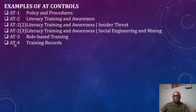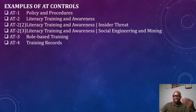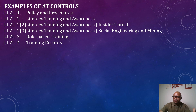AT-4 is training records. Organizations must keep a record of every training provided to employees — who has taken the training, who has not, what lessons were learned, and the consequences of not taking the training. This must be adequately documented as part of the controls under the AT control family.